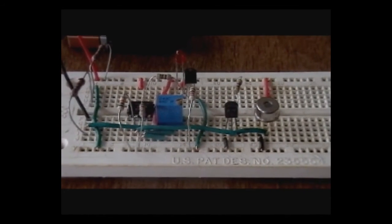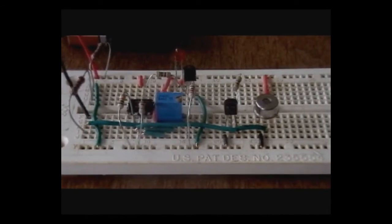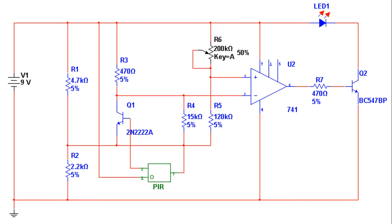So I have the schematic for the circuit here, and what you can see is I basically run the voltage through a voltage divider, and that allows me to give the 741 op amp both a positive and a negative voltage, and I use it in a comparator mode.